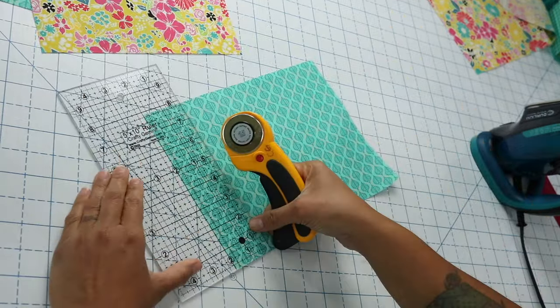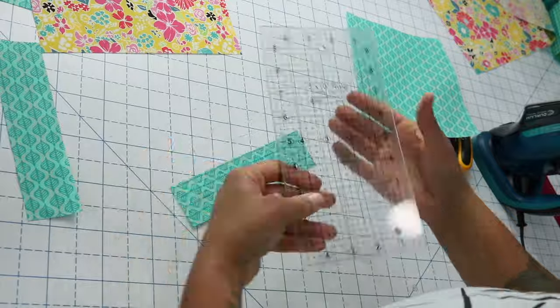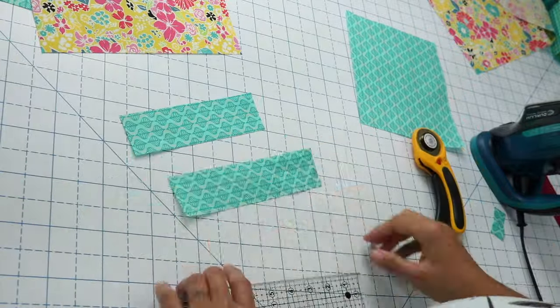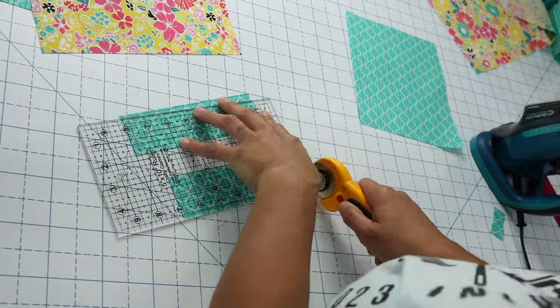For the basket handles, cut two strips that measure two inches by seven inches from whatever fabric you want. I'm just going to be using the same print as the lining fabric of my basket.